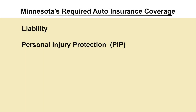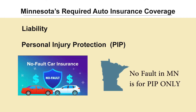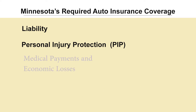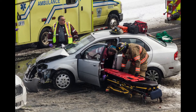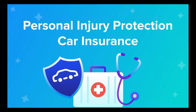Personal injury protection coverage, or PIP coverage. Minnesota is a no-fault state for PIP coverage and only the PIP coverage — this is often misunderstood. PIP covers medical payments and economic losses. Regardless of who is responsible for causing an accident, your auto insurance will cover the medical bills up to the limit you choose. PIP applies if you are in your car, a passenger in someone else's car, or are injured in any way by a car. PIP coverage enables you to get the medical attention that you need without having to wait for fault to be determined.